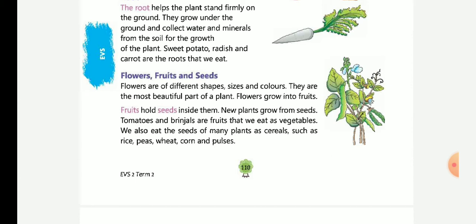Flowers are of different shapes, sizes and colors. They are the most beautiful part of the plant and flowers grow into fruits. Fruits hold seeds inside them. New plants grow from seeds. Tomatoes and brinjals are fruits that we eat as vegetables. We also eat seeds from plants as cereals such as rice, peas, wheat, corn and pulses.